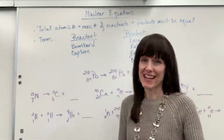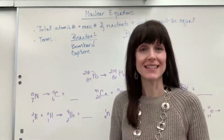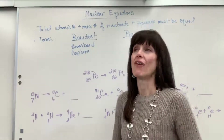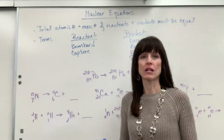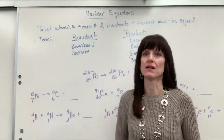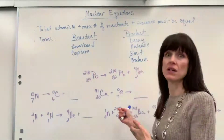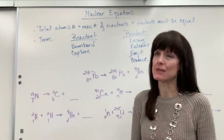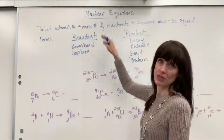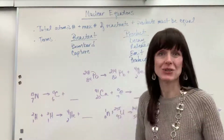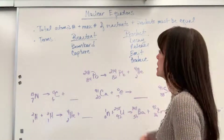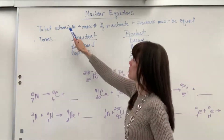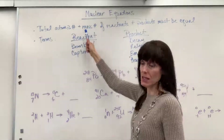Let's talk about balancing nuclear reactions. Of all the equations that you can balance, nuclear equations are absolutely the easiest. Here is the driving principle on balancing nuclear reactions: it's the total atomic number and mass number.